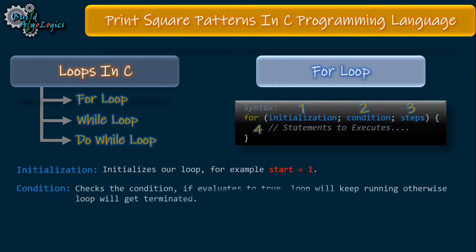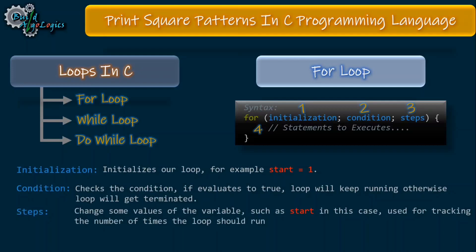The second part is the condition. As the name suggests, there is a condition that tracks whether the loop should continue its execution or terminate. If this condition evaluates to true, the loop keeps running; when it becomes false, the loop terminates automatically. You must keep in mind that to break or terminate the loop after completing the intended task, you need to tweak this condition so that at some point it becomes false, otherwise you'll have an infinite loop. That's where the third part — the steps — comes in. Here we increment or decrement the variable used in the condition so that at a particular point the condition becomes false and the loop terminates.